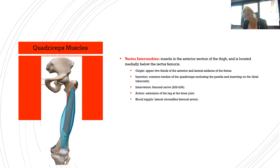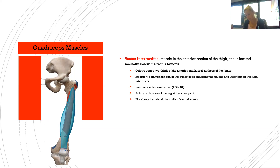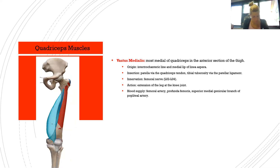The vastus intermedius is located in the anterior thigh, immediately below the rectus femoris. Origin: upper two-thirds of the anterior and lateral surface of the femur. Insertion: common tendon of the quadriceps, enclosing the patella and inserting on the tibial tuberosity. Innervation: femoral nerve L2–L4. Action: extension of the leg at the knee joint. Blood supply: lateral circumflex femoral artery.